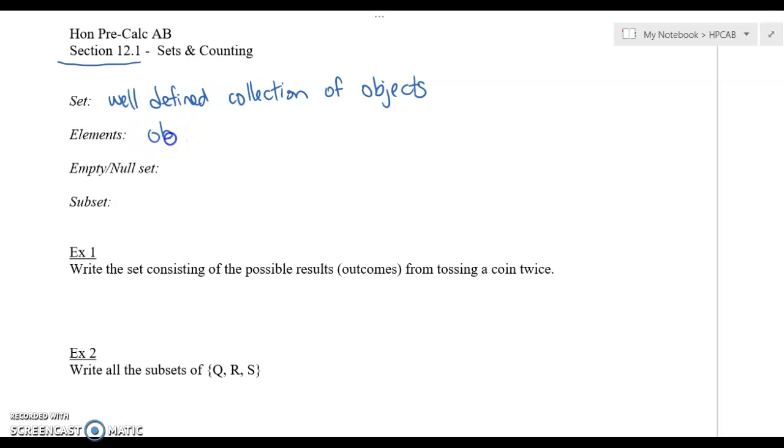Elements are going to be the objects of a set. So again, the objects could be numbers or letters. They could represent different things like heads versus tails or a one, two, three, four, five, or six on a die.